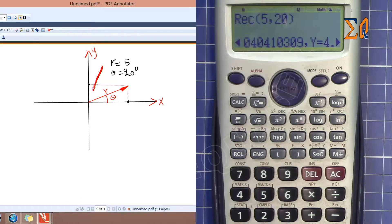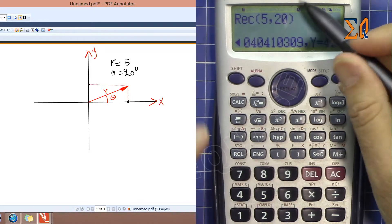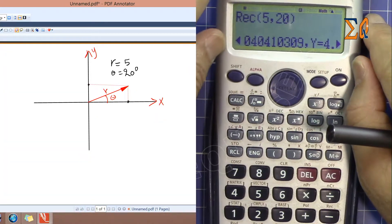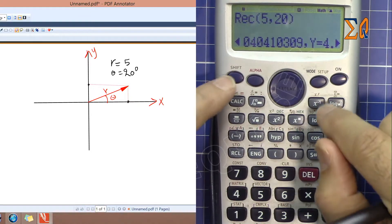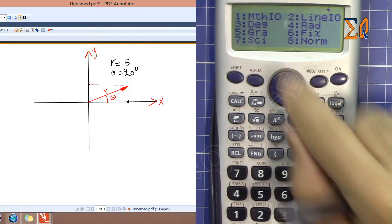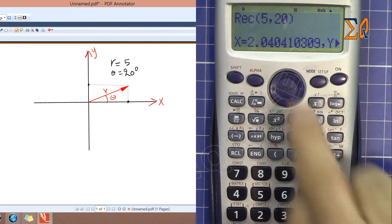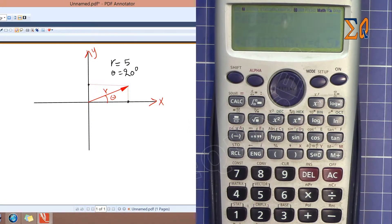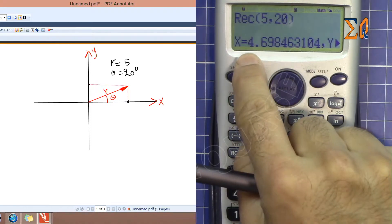So let's set the calculator to the proper format which is degree. Press shift setup number three degree. Now look, X changes and also Y which was 4.5 will change. So now